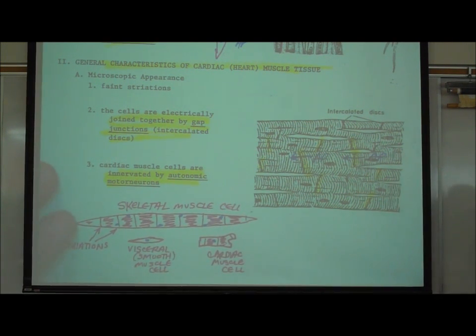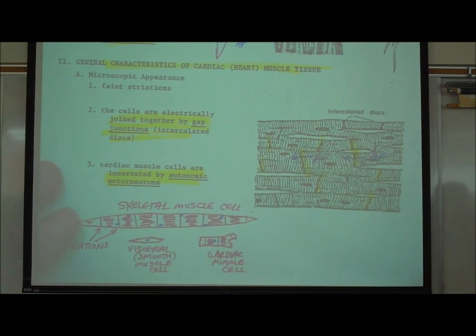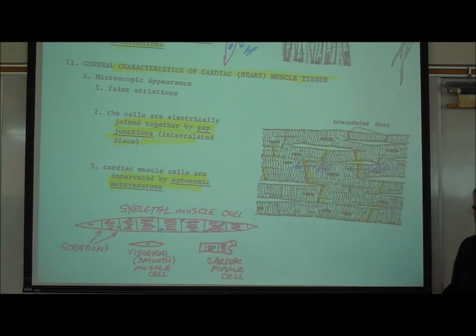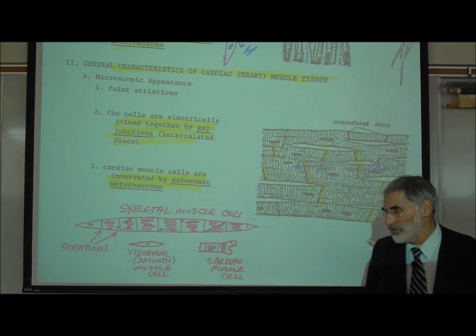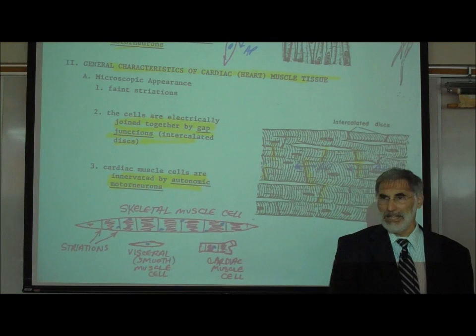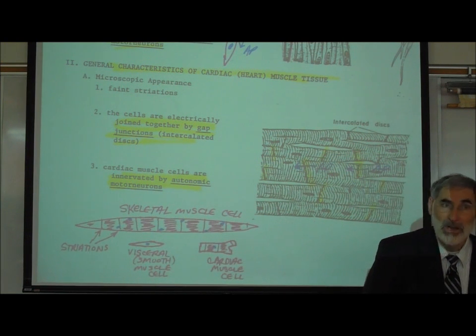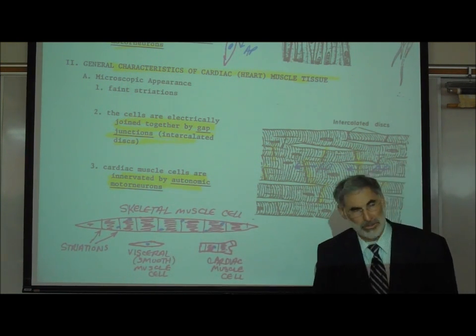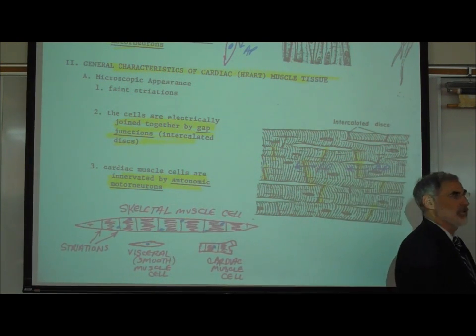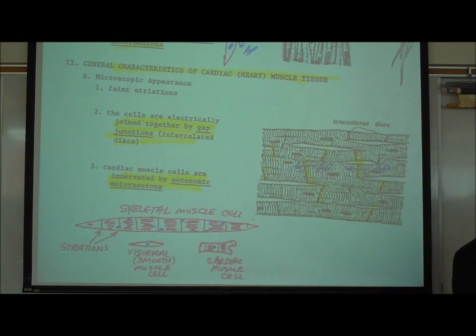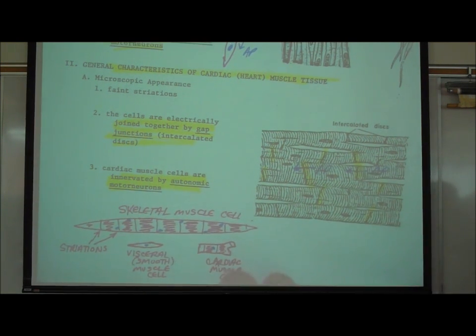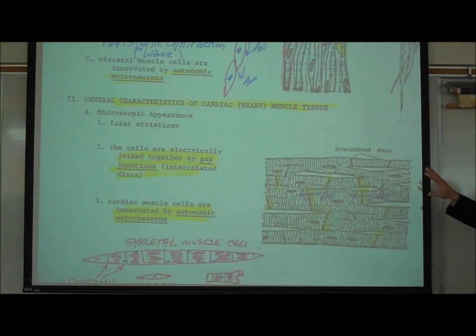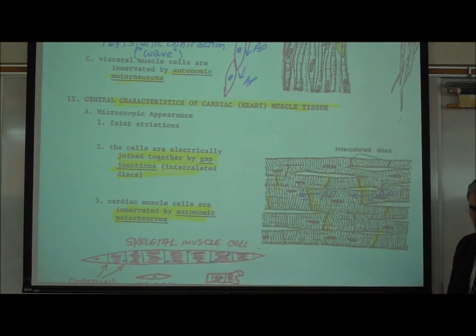So we have spoken of the three categories of muscle tissue: skeletal muscle, visceral smooth muscle in the walls of our internal organs, and cardiac muscle, which is found in the heart.